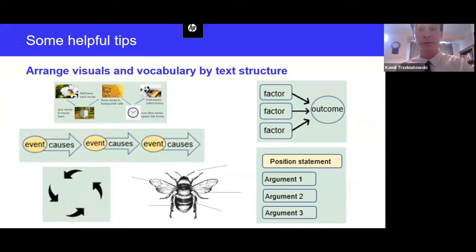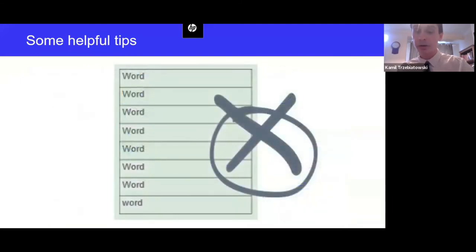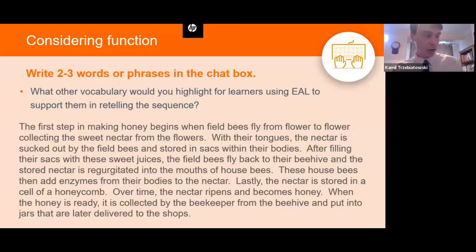Another helpful tip is to arrange your visuals based on the structure and purpose of the text — whether it's spoken or written. Add images and vocabulary to these, as we did for the honey text. You can have pupils create these and turn them into word walls or graphic organizers for their own reference. We want to get away from providing a long list of single words to look up in the dictionary and memorize.